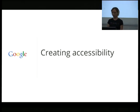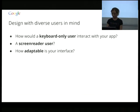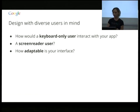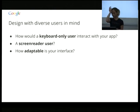So that's what accessibility looks like — how do we go about actually creating that for our websites? Ideally, we start at the design process and design with diverse users in mind — this is actually going to help everyone who's using the site. Having things like personas for these users is really helpful. Looking at how a keyboard-only user would interact with your app, and how a screen reader user would use your site — thinking through interactions like drag-and-drop or hover. And how adaptable is your interface?